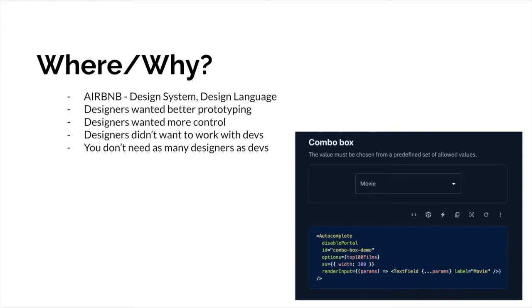And if you want to hook in A/B tests and switch out variables of components — color, padding, icons — you could do all of that. At Expedia it wasn't uncommon for us to have a few hundred A/B tests running at any one time, where for a subset of clients we'd use a different shade of green. Things like that. So it was really, really powerful.